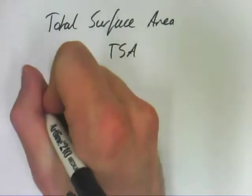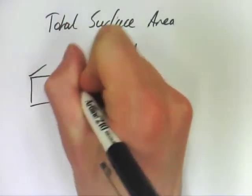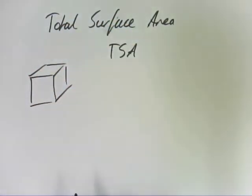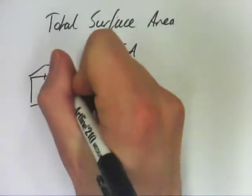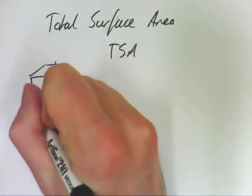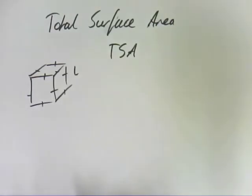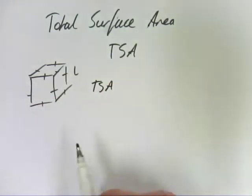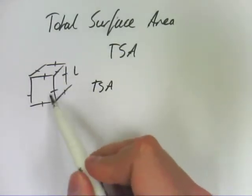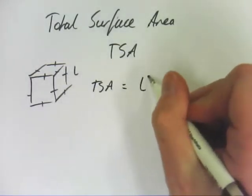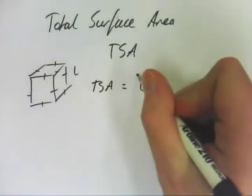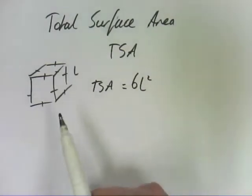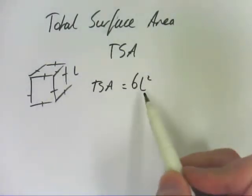But there are some formulas that make life a fair bit easier. So let's say you have a cube, and all the sides on this cube are the same, and they have the length L. The TSA, the total surface area - the area of one face is L squared. And how many faces on a cube? There are six. So the total surface area of a cube is 6L squared.